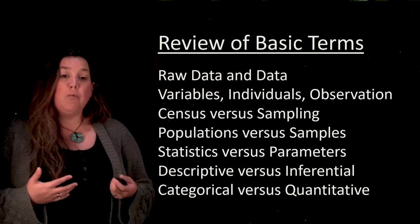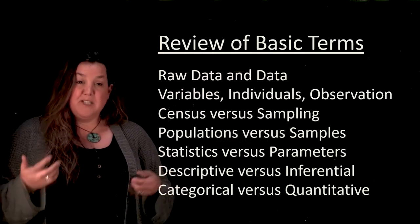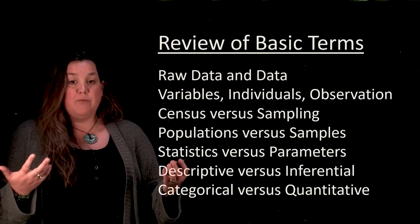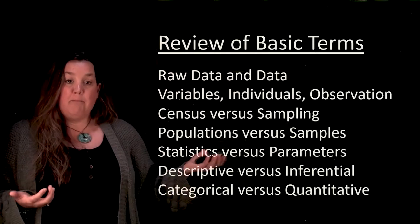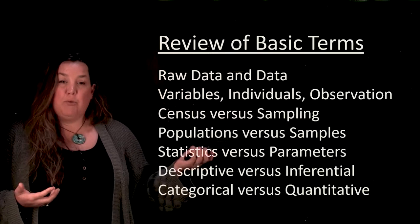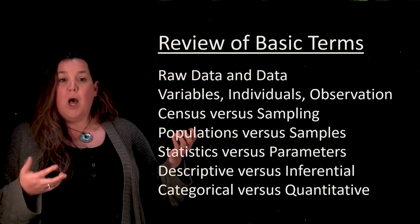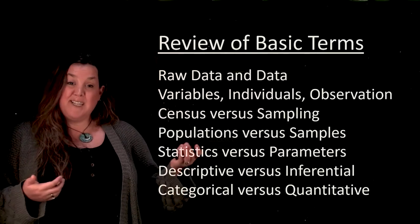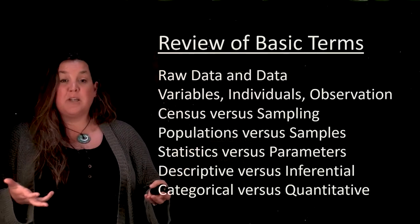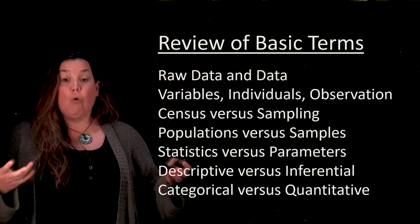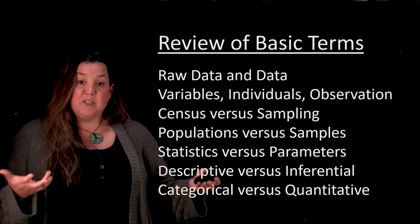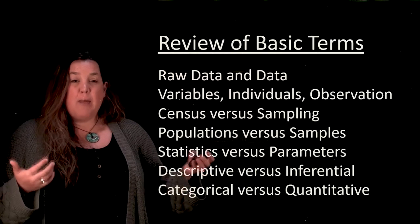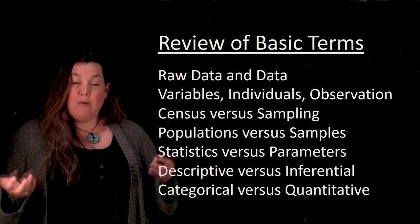We talked about the census versus sampling. A census is when you take an entire group of interest — we have that population. Remember those are tied together: a population is the whole entire group, and a census is collecting information on that whole entire group. A census by definition has to have every individual in the population.